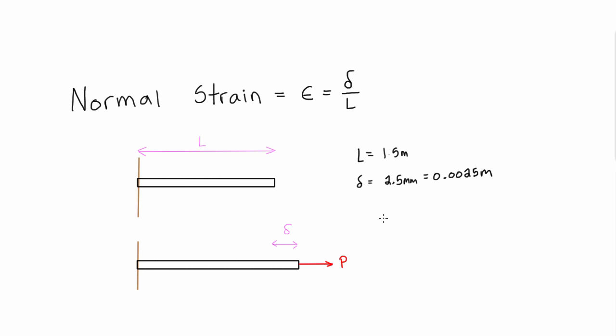Then if we want to calculate the strain, all we do is just divide delta by L, the original length. And we get 0.0025 meters divided by 1.5 meters, and we get our normal strain here of 0.00167. You'll notice that the meters here cancel out, and you'll see that strain is actually just a unitless number.